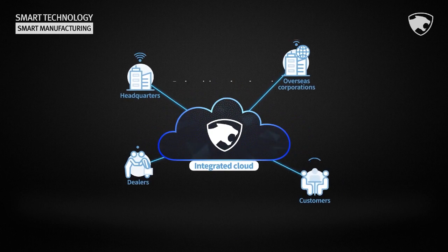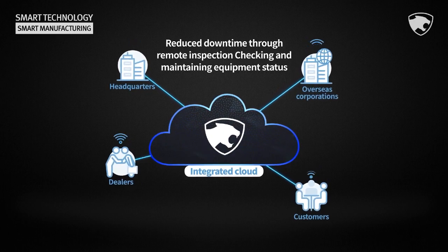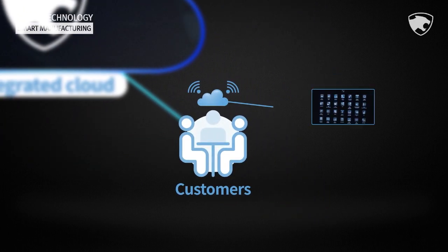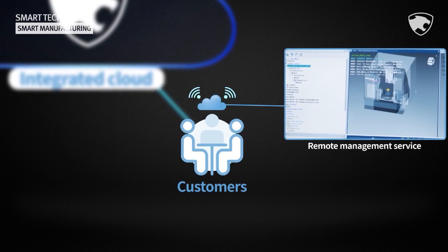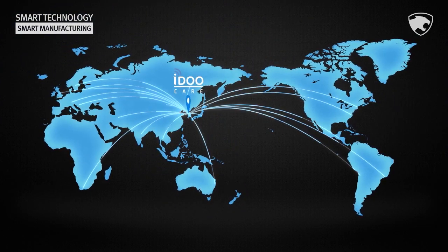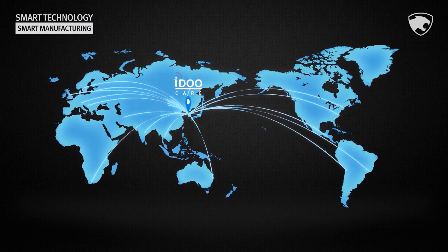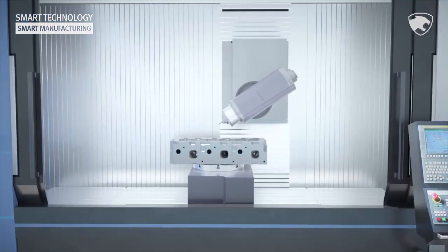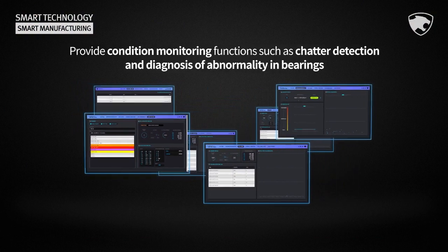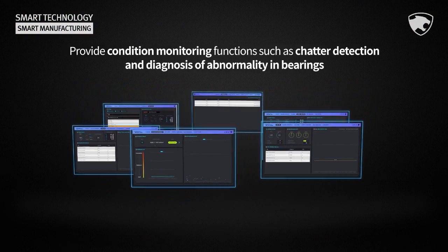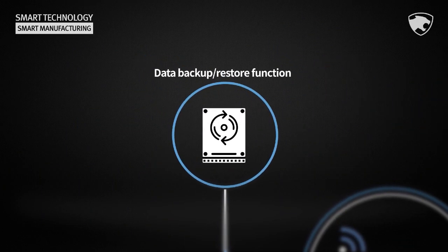Headquarters, overseas corporations, and dealers can remotely check abnormalities of customers' equipment to shorten equipment failure time. Doosan Machine Tools customers can conveniently manage the condition of their equipment from long distances. iDoCare provides high convenience to users by connecting individual equipment. iDoCare's condition monitoring detects abnormalities during machining of connected equipment, categorizes them by program, and notifies the user. iDoCare also provides a data backup and restore function for NC data loss.